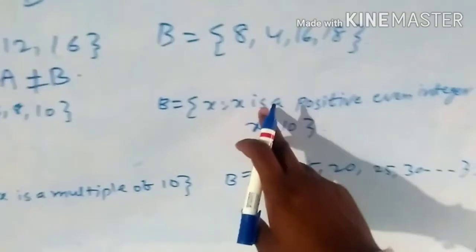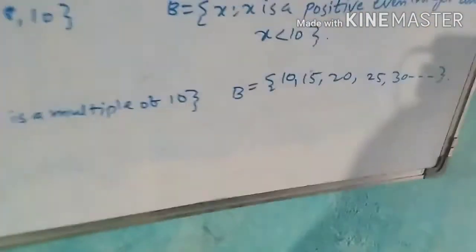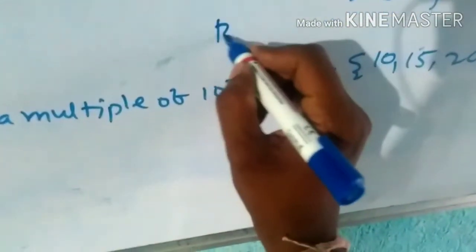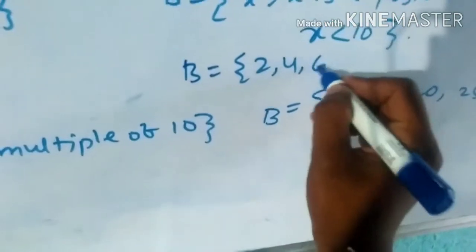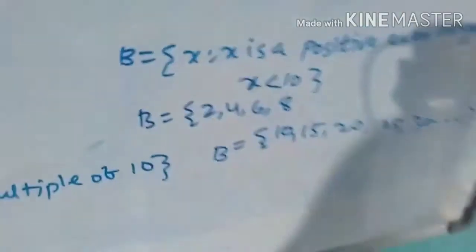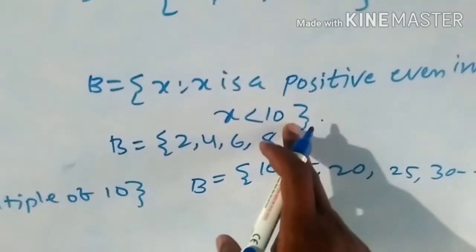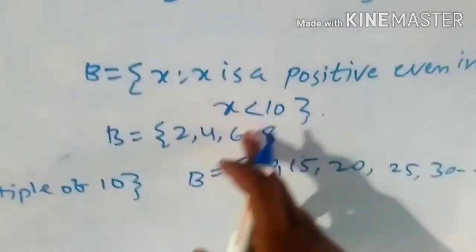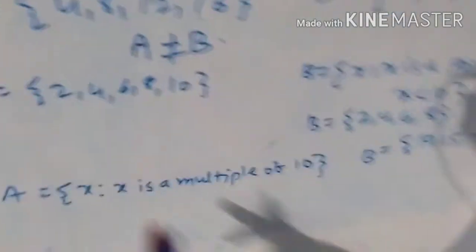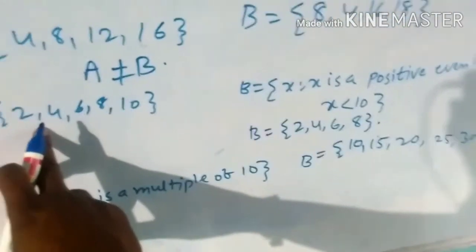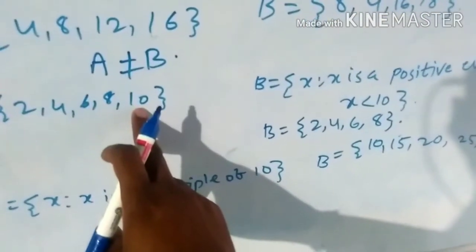Next, third question: A is equal to {2, 4, 6, 8, 10}. B is equal to {x such that x is a positive even integer and x is less than 10}. Even integers are 2, 4, 6, 8, and since x must be less than 10, we take up to 9 only. So B is equal to {2, 4, 6, 8}.